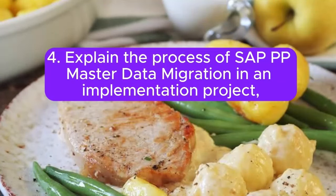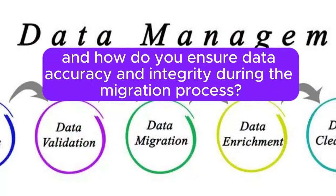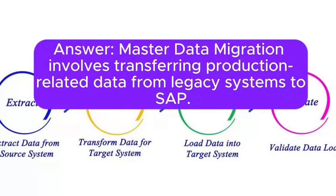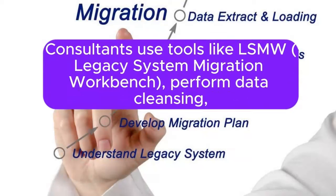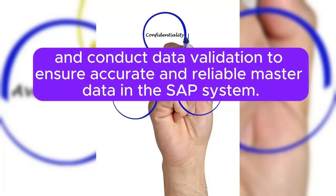Question 4: Explain the process of SAP PP master data migration in an implementation project. How do you ensure data accuracy and integrity during migration? Master data migration involves transferring production-related data from legacy systems to SAP. Consultants use tools like LSMW (Legacy System Migration Workbench), perform data cleansing, and conduct data validation to ensure accurate and reliable master data in the SAP system.